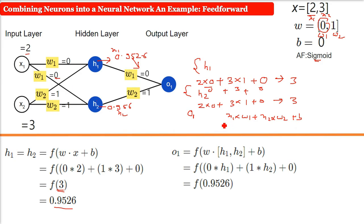So here 0.9526 times 0 plus 0.9526 times 1. Bias is 0. What do we get? This one only, 0.9526. And this again has to pass through the sigmoid function. So when it passes through the sigmoid function, what do we get? We get a value of 0.7216.